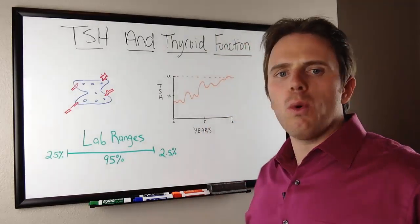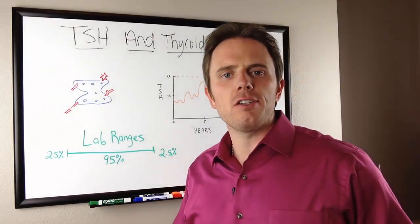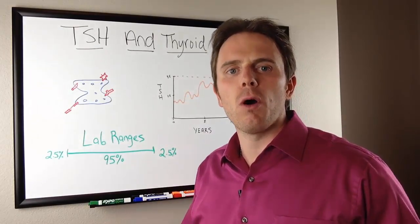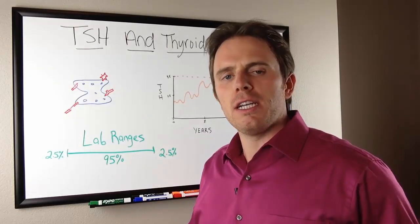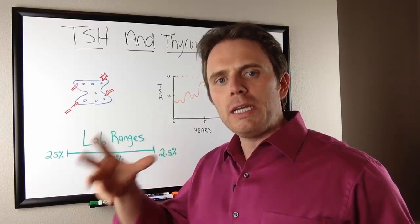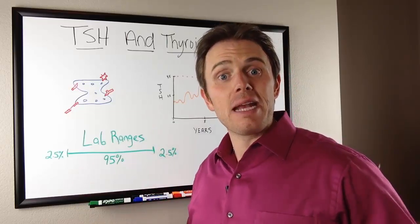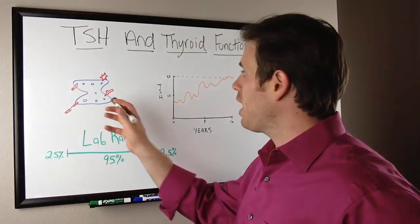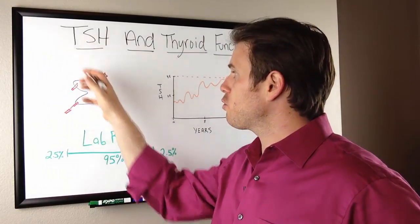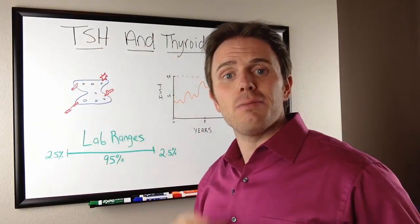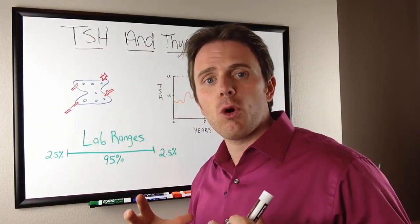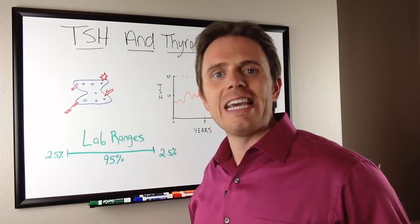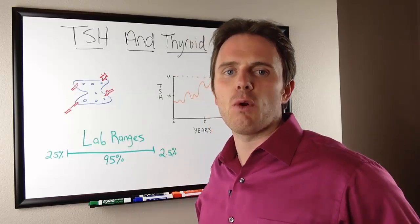So let's recap. What is TSH? TSH is a pituitary, or brain, hormone. TSH screams down to the thyroid gland to make some thyroid hormone. So this is your thyroid gland here. TSH screams down and says make some thyroid hormone and the thyroid pops out some T4, which is inactivated thyroid hormone.